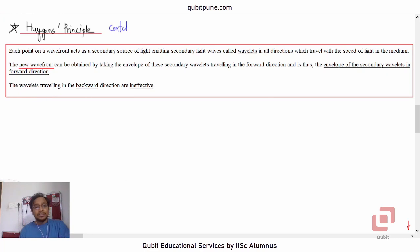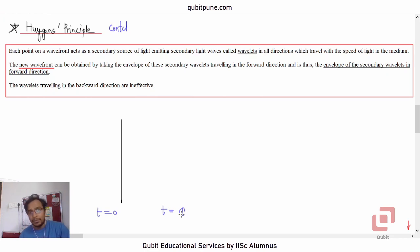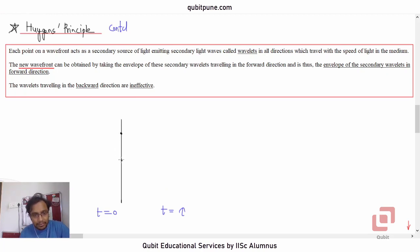Let me explain how to apply Huygens' principle for a traveling planar wavefront. Suppose this is a planar wavefront at t = 0. Now suppose we allow tau units of time to pass. During that interval, every point on the planar wavefront is going to act like a secondary source of light.